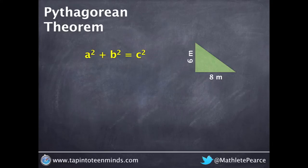Since a and b represent the shorter sides of the right angle triangle, we're going to substitute 6cm and 8cm for a and b into our formula.